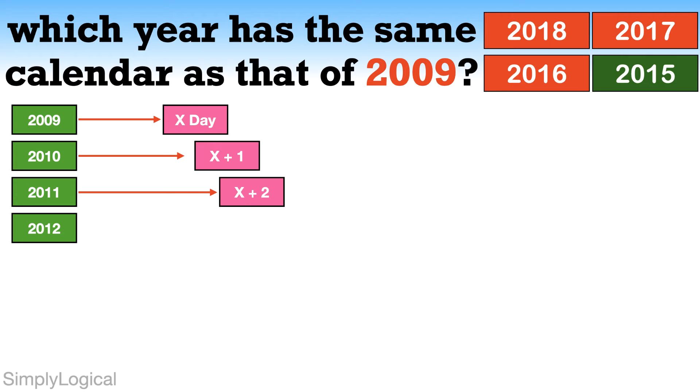Again, it means the first day of 2013 will be X plus 5 day, as there are two odd days in one leap year 2012, which is your previous year.